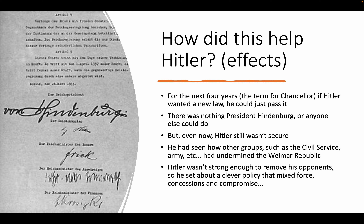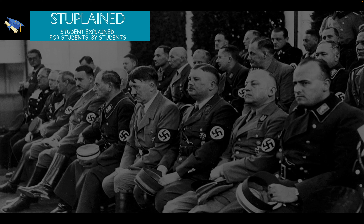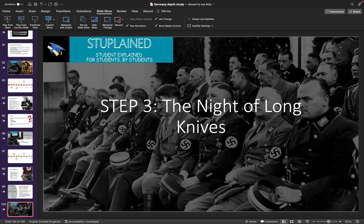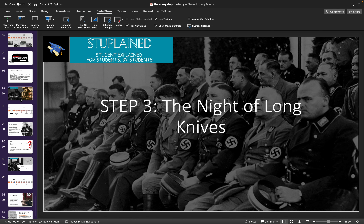So he set about a clever policy that makes use of force, concessions, and just a bit of compromise. This is step three in Hitler's plan to consolidate his power to become the Führer of Germany — the Night of Long Knives. We'll explore this in the next video.